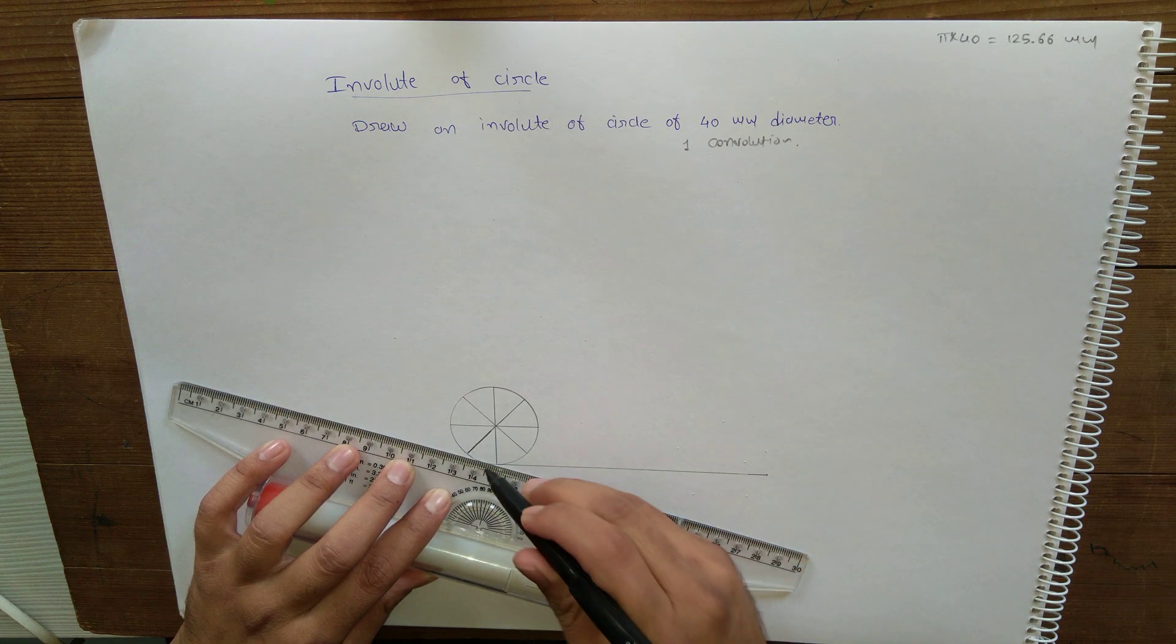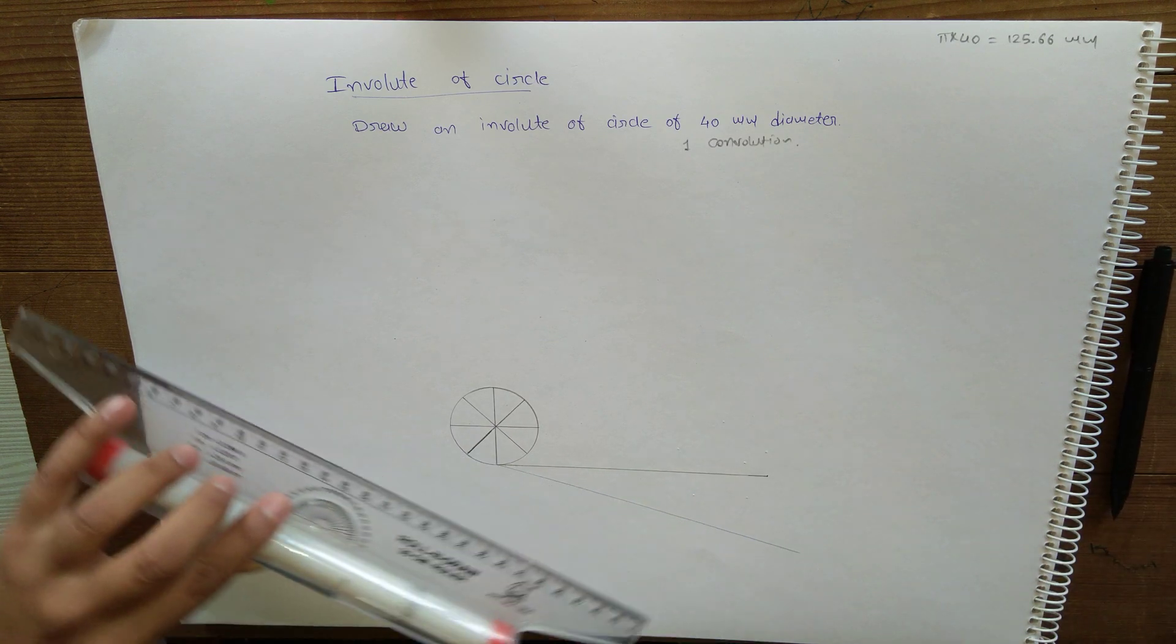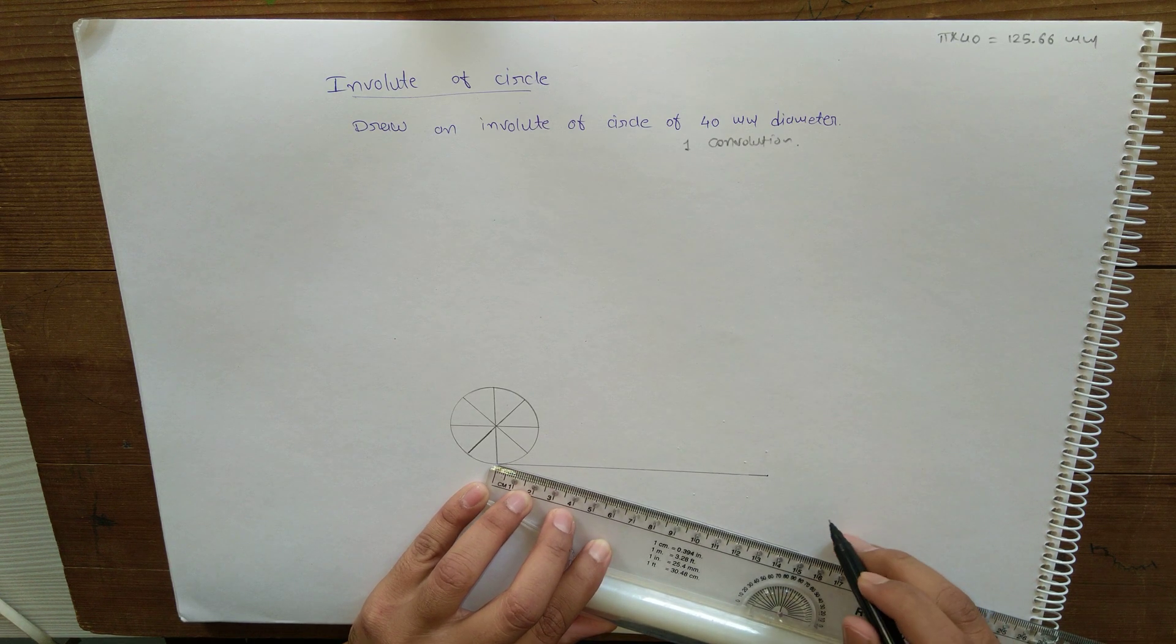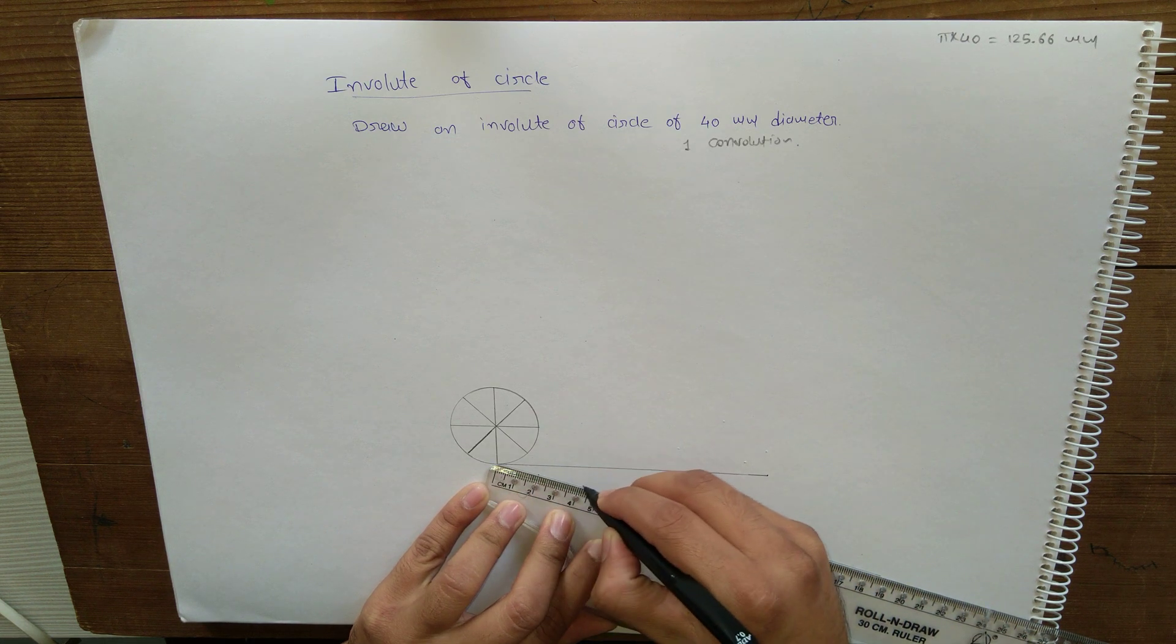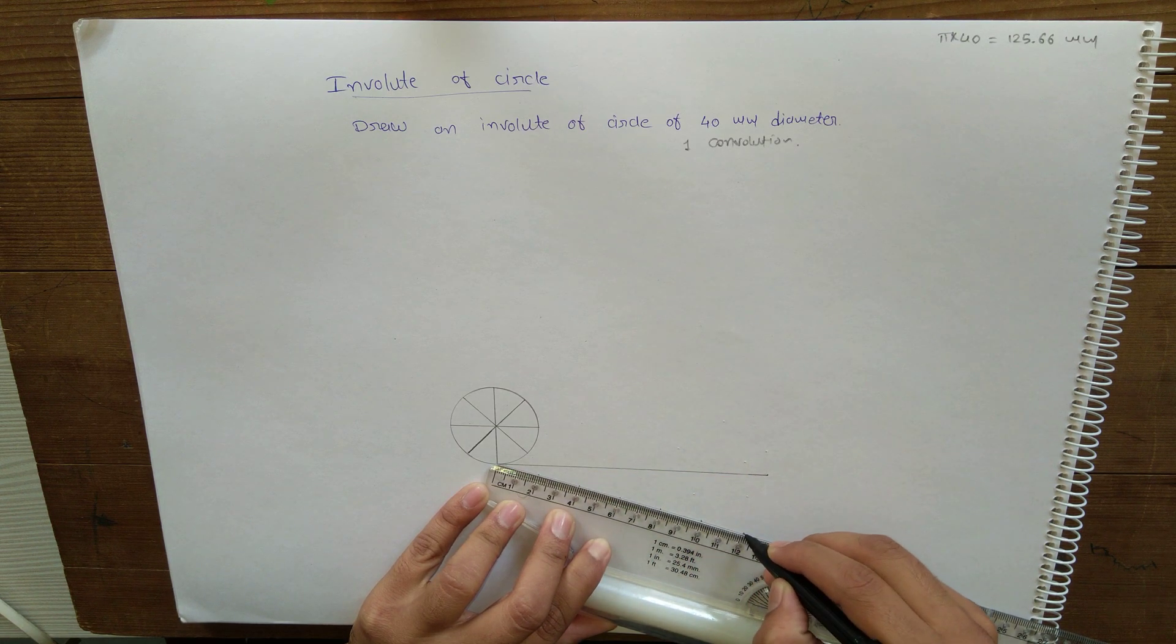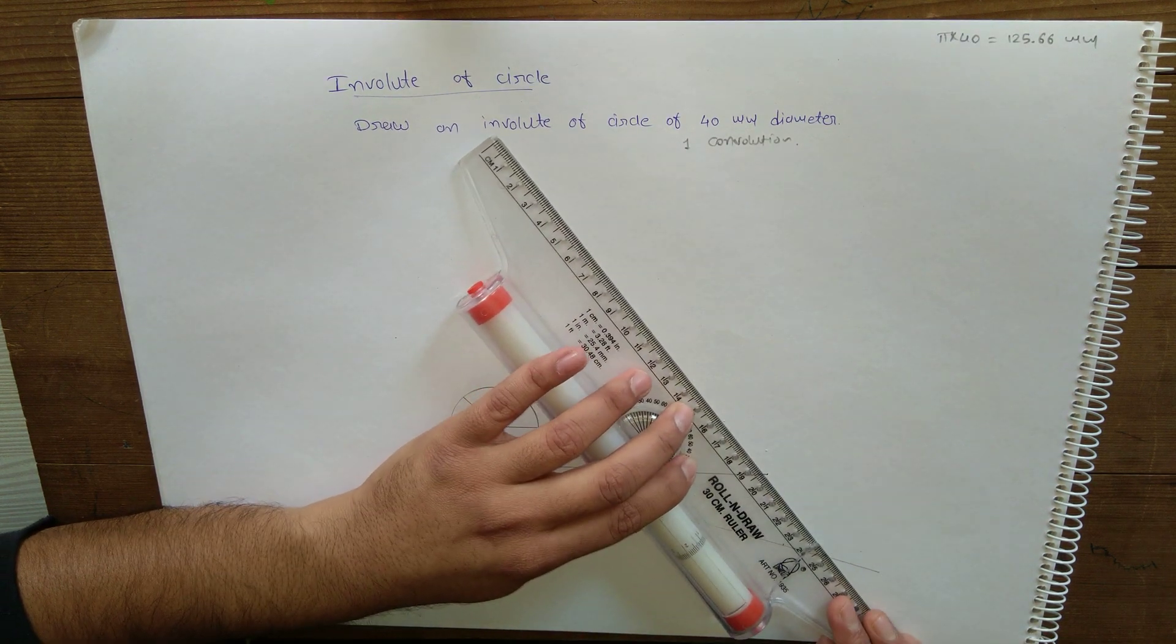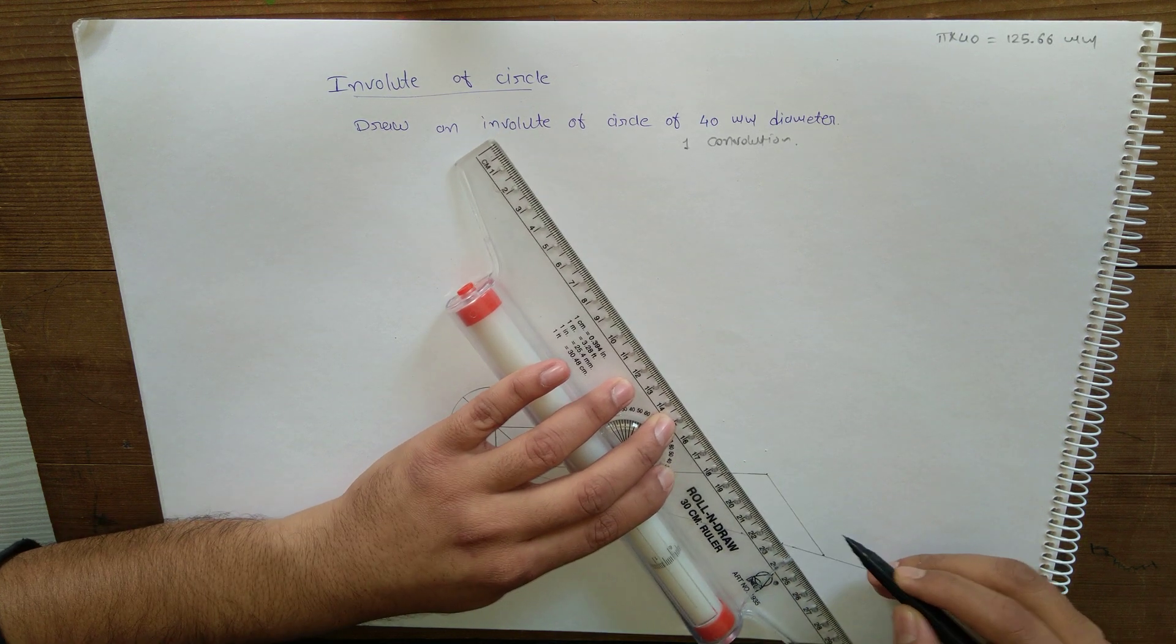For that I am drawing one line at any arbitrary angle, and first I will make eight equal parts on this line. For that I am taking parts of 22 centimeters on this line. So we have eight parts on this line which I am transferring on the other required line.